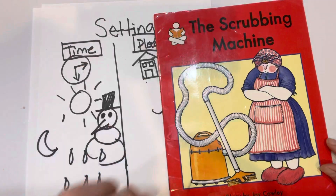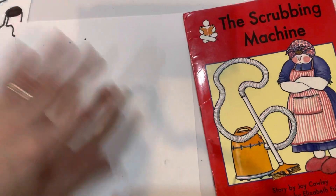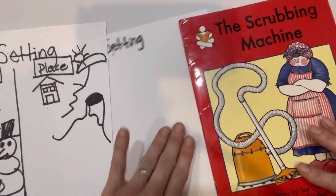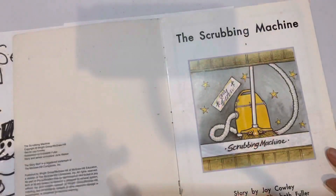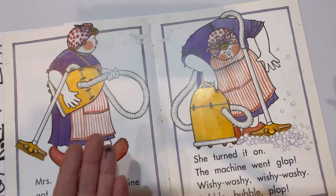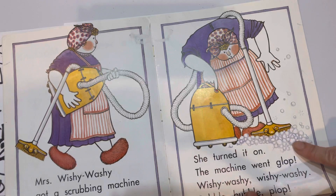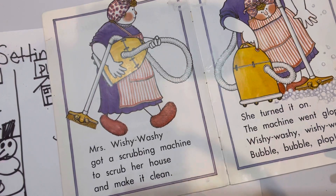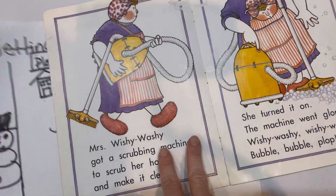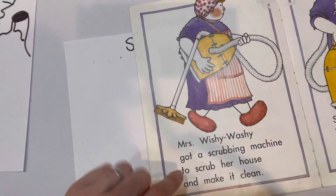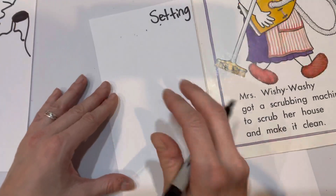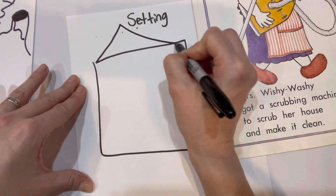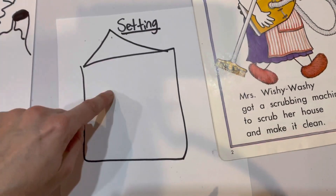In the scrubbing machine, the setting is... Let's look at the book. I don't know what time it is, but the story says she wants her house to make it clean. So the house for Miss Wishy Washy is where it happened. So it is inside her house. So the setting is her house.